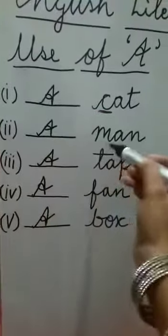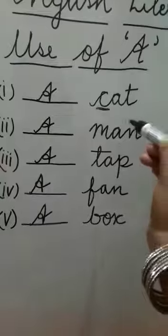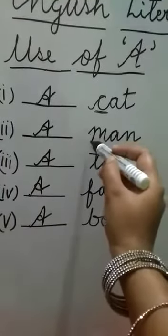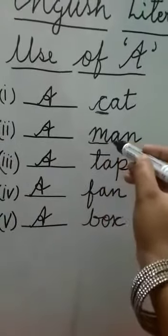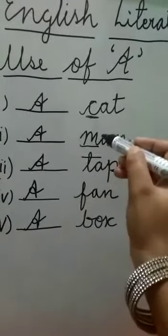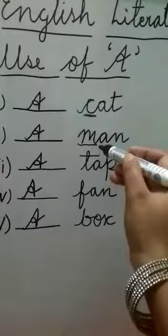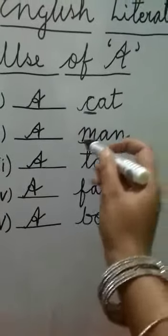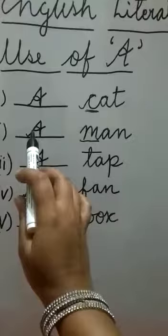Second one, A man, M-A-N. The first letter of this word man is M. And M is what? M is not a vowel, it is a consonant. So here I have used A.